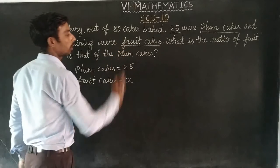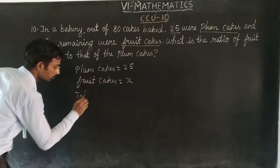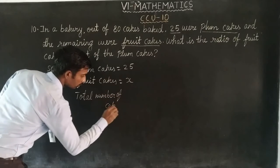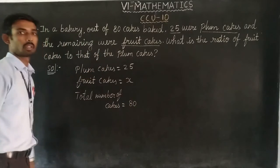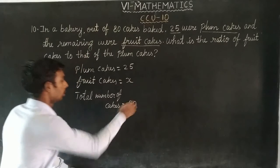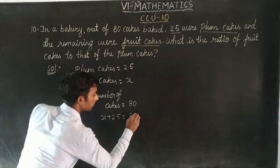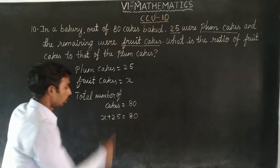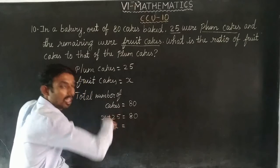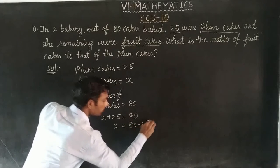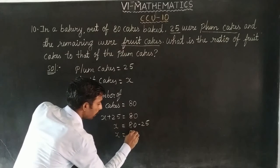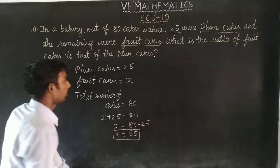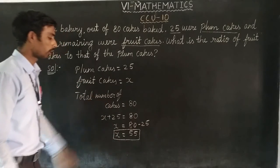So total number of cakes is equal to 80. Now remember, x plus 25 equals 80. So x is the number of fruit cakes. The value of x is equal to 80 minus 25, which equals 55. So x equals 55, meaning fruit cakes equal 55.